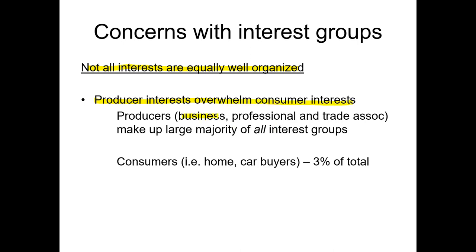It's the producer interests — businesses, corporations, professional and trade associations — that overwhelm the consumer interests. They make up a large majority of all interest groups as well as a vast majority of the spending, particularly with campaign contributions and lobbying. Consumer groups, such as those representing people who buy products like homes or cars, represent only about 3% of all total interest groups in the country.